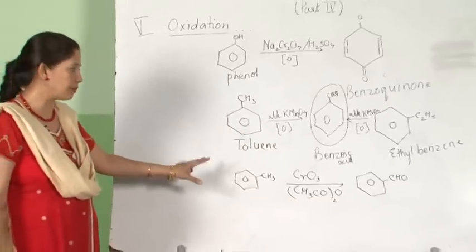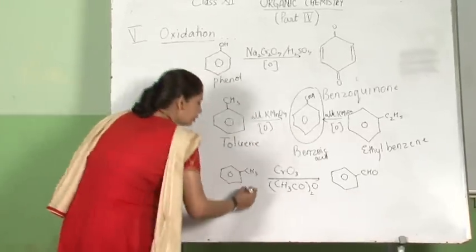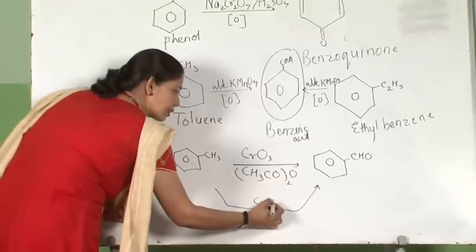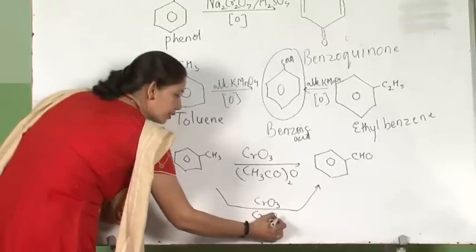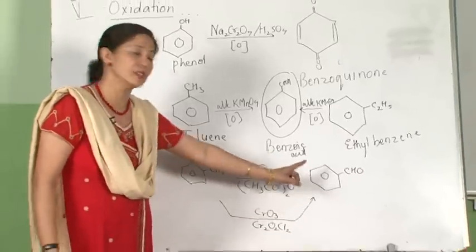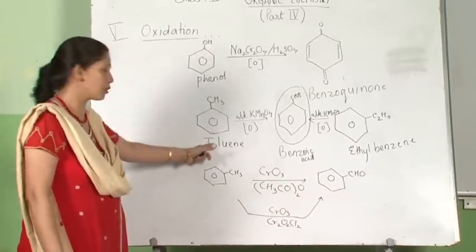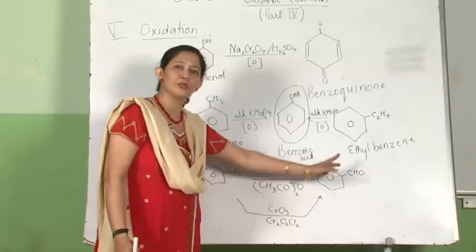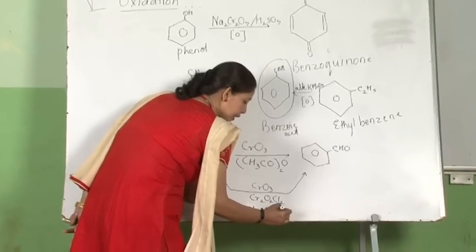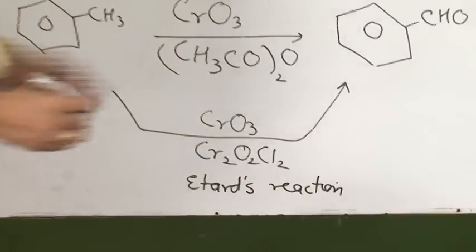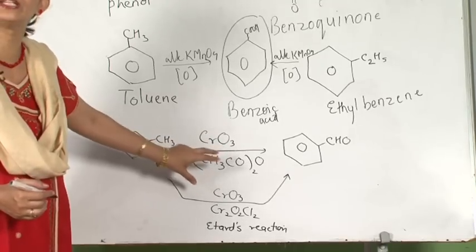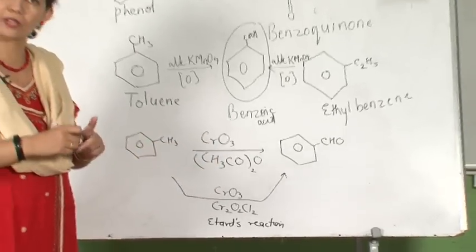Now I am going to keep the reactant and the product the same but slightly change the reagent. Here I am going to have chromic oxide in presence of chromyl chloride — I am getting benzaldehyde. This reaction, the conversion of methyl benzene (common name toluene) with chromyl chloride to benzaldehyde, is called Etard's reaction. This is one of the naming reactions. In this reaction, further oxidation did not take place because a non-oxidizable derivative is formed as an intermediate.